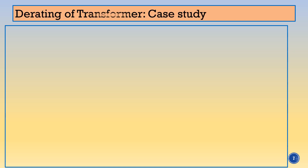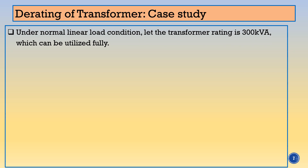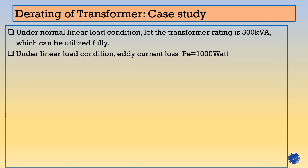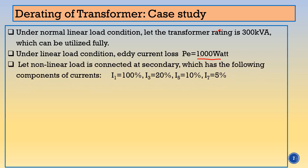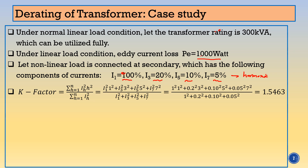Let us study this with a case study. Under normal load condition, let the transformer rating be 300 kVA, which can be utilized fully under the linear load condition. Let eddy current losses be 1000 W. Let a nonlinear load be connected at the receiving end. The fundamental component of the current is 100%, third harmonic is 20%, fifth harmonic is 10%, and seventh harmonic is 5%. You can get this data from any harmonic analyzer if you connect it across the nonlinear load.